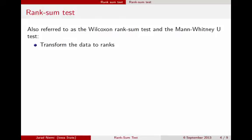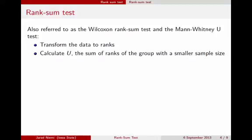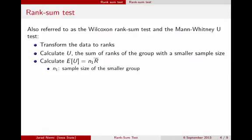I'm going to go through a simple example to show what this means. The idea is that every observation — every car in the data set — now has a rank associated with it. Then you take the group with the smaller sample size and calculate the statistic U, which is just the sum of those ranks for that group. You then calculate what we expect to see in that group, which depends on the sample size of that group as well as the average ranks — the product of sample size and average rank gives what we'd expect for U if the null hypothesis were true, meaning no difference in miles per gallon between American and Japanese cars.